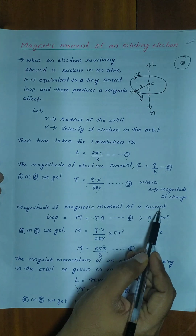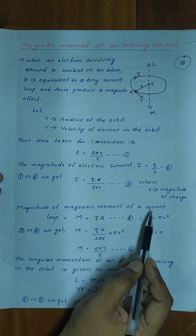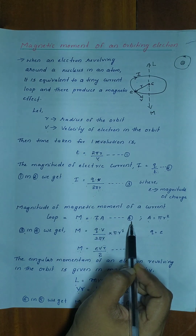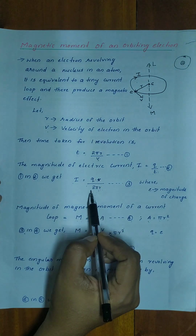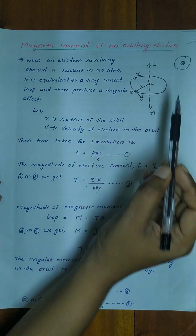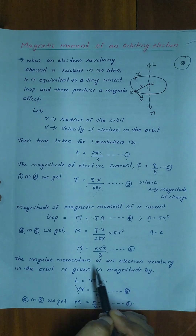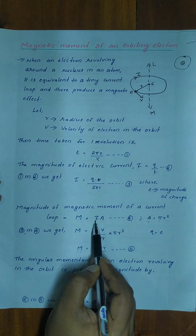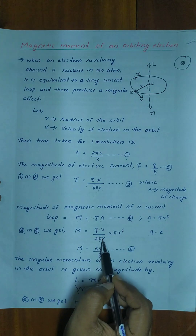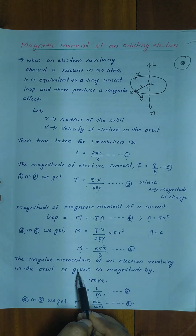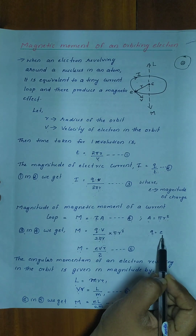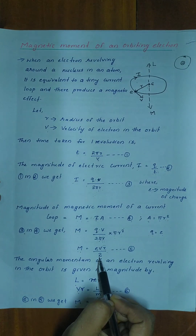The magnitude of magnetic moment of a current loop is M = I × A, which we consider equation 4. The area A = πr². Substituting equation 3 into equation 4, the πr² terms simplify, and it turns out M = qvr/2. Since q = e, we get M = evr/2, and we consider this equation 5.